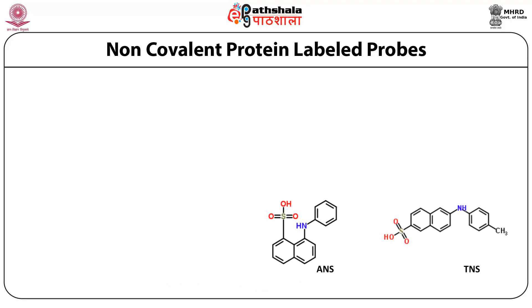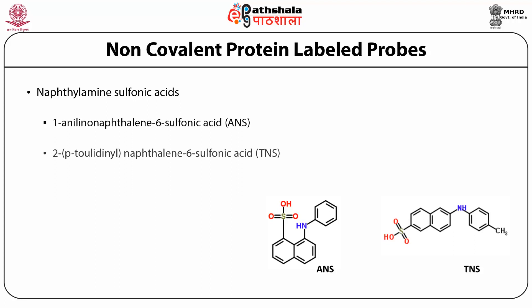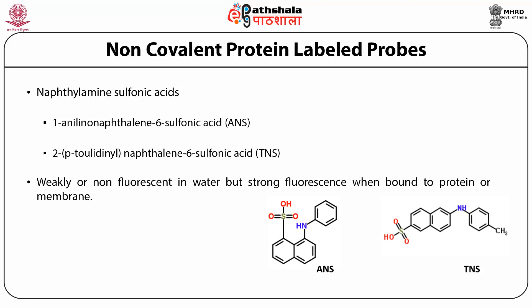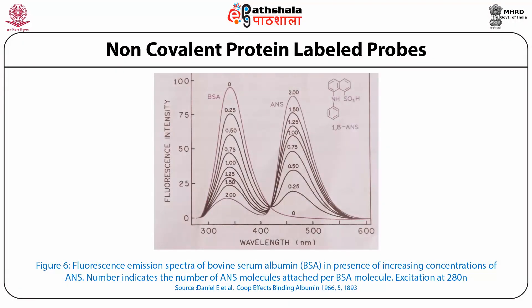In addition to covalent probes used for protein study, some dyes are available which are non-covalent in nature and bind non-covalently to proteins. For example, naphthalaminesulfonic acids — 1-anilinonaphthalene-6-sulfonic acid (ANS) and 2-p-toluidinylnaphthalene-6-sulfonic acid (TNS) — are used as non-covalent protein label probes. They are weak or non-fluorescent in water but when bound to protein or membrane they show strong fluorescence. This slide shows fluorescence emission spectra of bovine serum albumin in the presence of increasing concentrations of ANS, where the number indicates the number of ANS molecules attached per BSA molecule, with excitation wavelength at 280 nm.